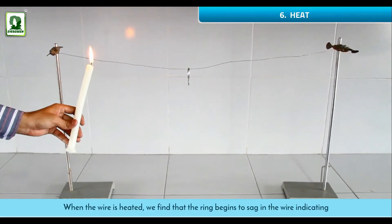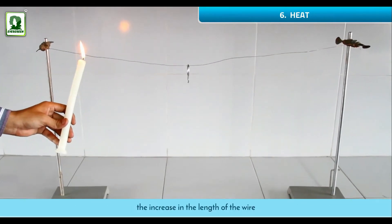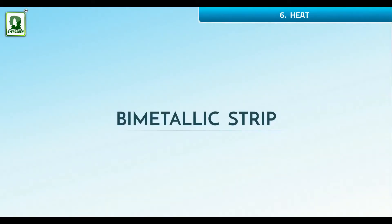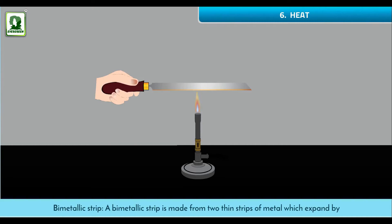Bimetallic strip: A bimetallic strip is made from two thin strips of metal which expand by different amounts when heated. Often brass and steel are selected. The two pieces are welded. When heated, brass expands more than steel, bending the strip into an arc.